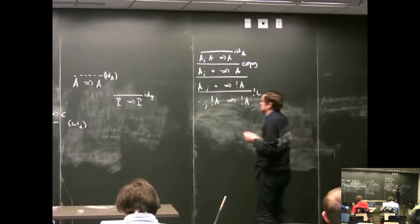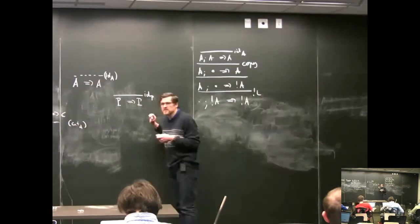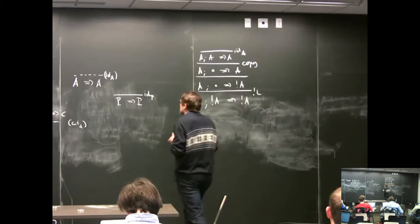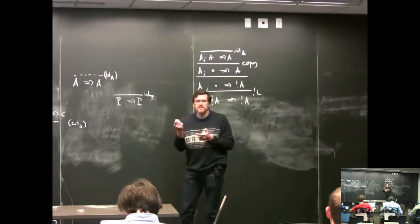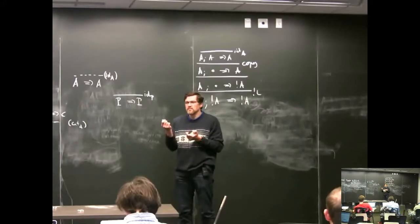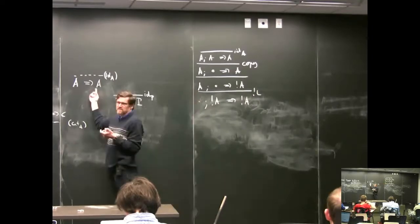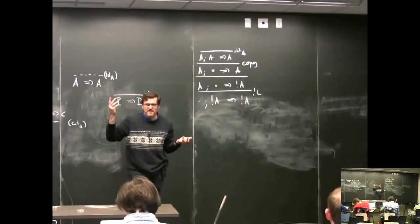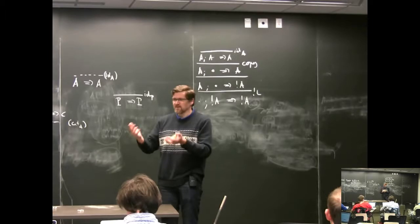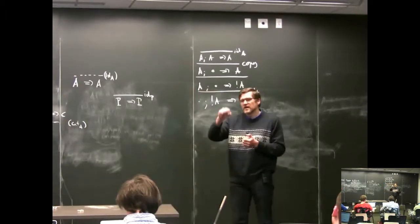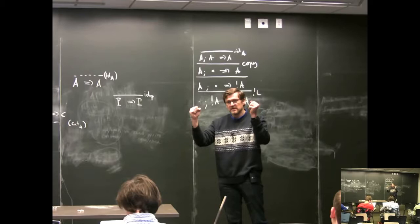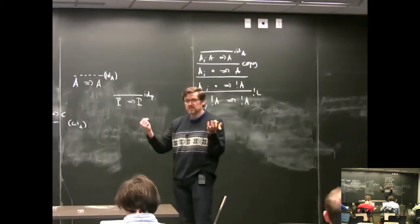To prove that we only need identity at atomic types, we use induction. We only have A to work with, so we try structural induction on A. The identity expansion already decomposes — for example, identity at A implies B reduces to identity at A and identity at B — so doing induction on the structure of A will likely get us there.